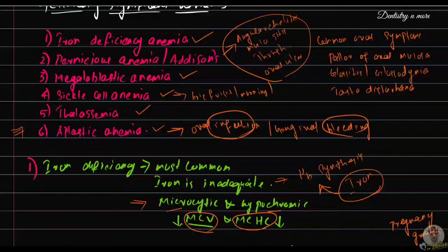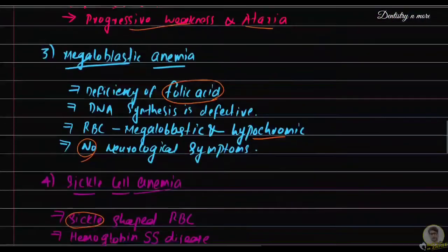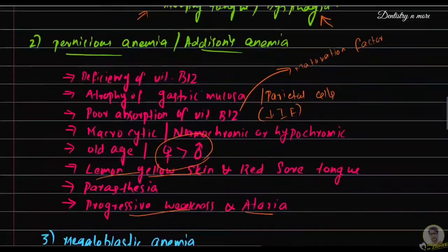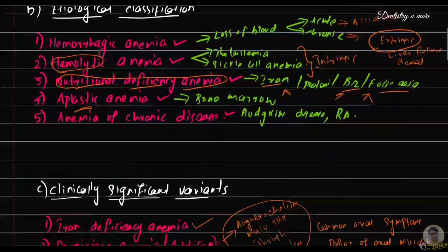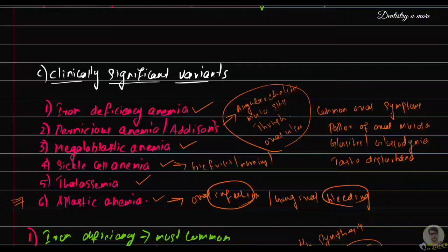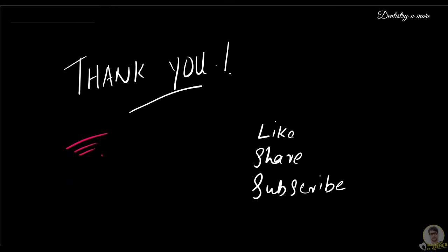So that covers the oral manifestations — common oral symptoms, symptoms specific to pernicious anemia, and precautions for aplastic and sickle cell anemia patients. That's all for today. We covered classification and oral manifestations of anemia, including the clinical variants: iron deficiency anemia, pernicious anemia, megaloblastic anemia, sickle cell anemia, thalassemia, and aplastic anemia. Understanding anemia is essential, not just for exams but for clinical practice. Thank you.